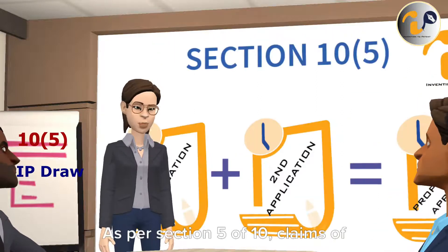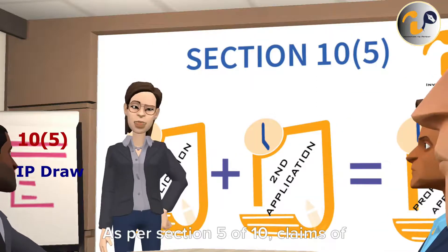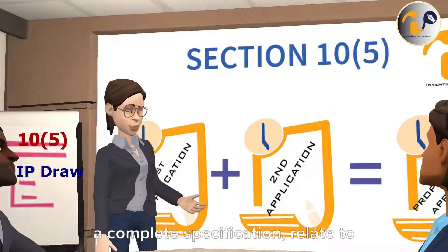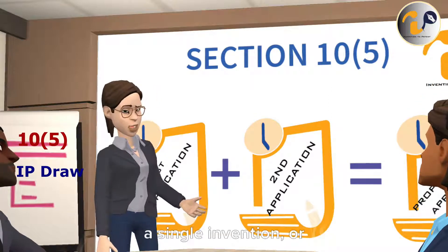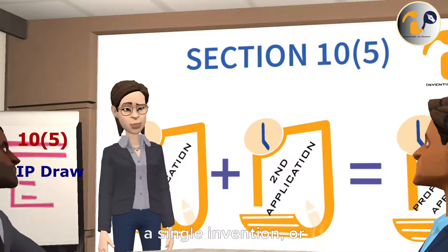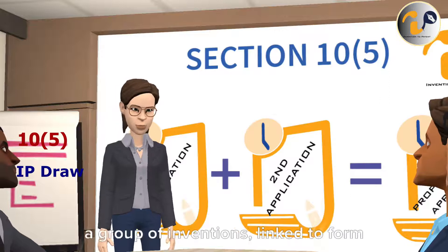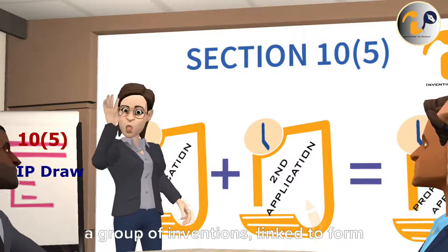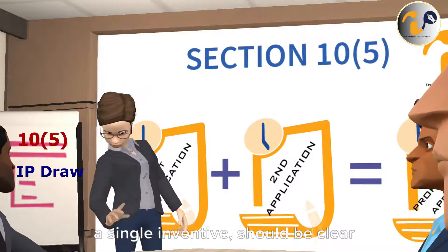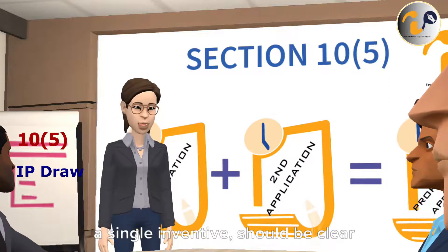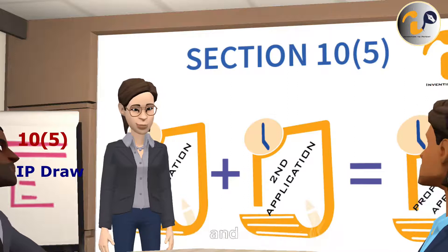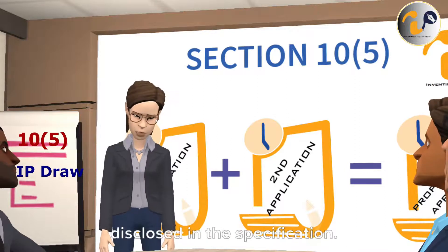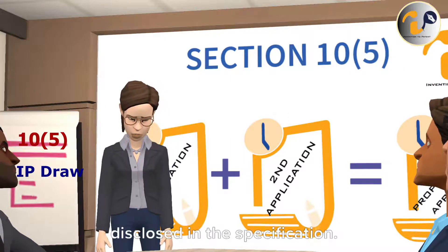As per Section 10(5), claims of a complete specification relate to a single invention or a group of inventions linked to form a single inventive concept, and should be clear and be based on the matter disclosed in the specification.